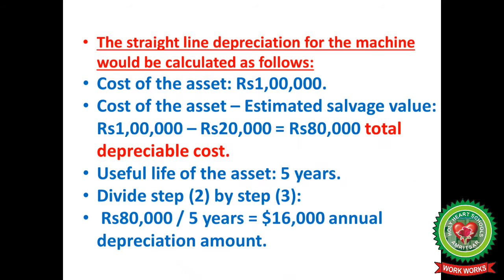Straight line depreciation for a machine is calculated as follows. For example, the cost of an asset is $1,00,000. We deduct the salvage value of $20,000 from the actual cost, giving an adjusted estimated cost of $80,000. With a useful life of 5 years, we divide the adjusted cost by the number of years: $80,000 divided by 5 gives a depreciation amount of $16,000 per year.